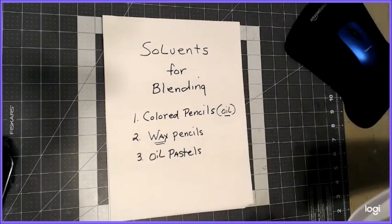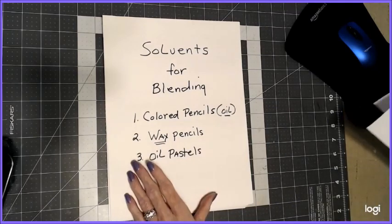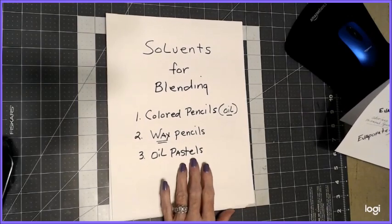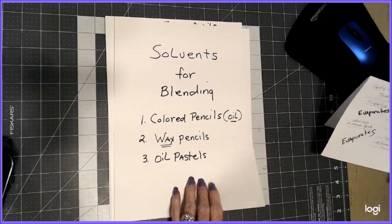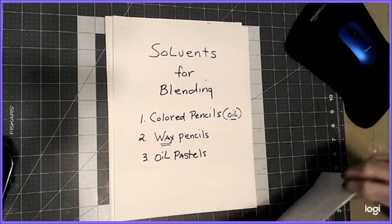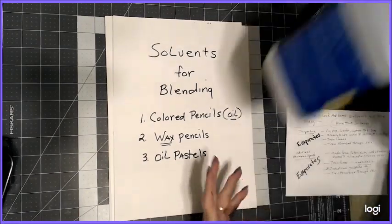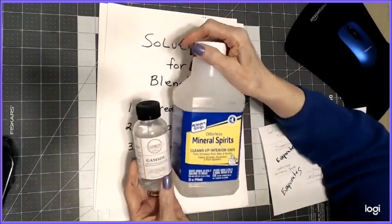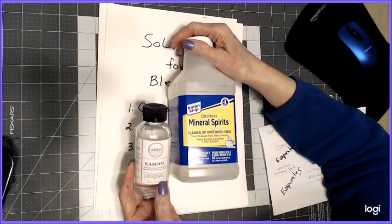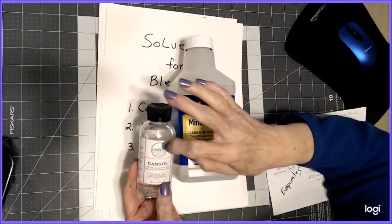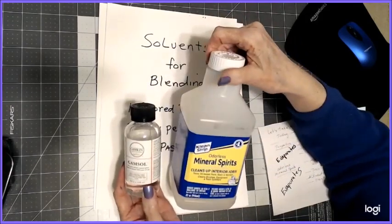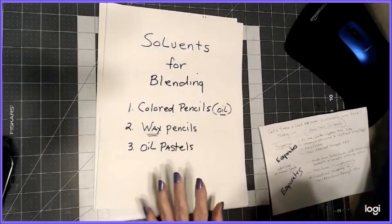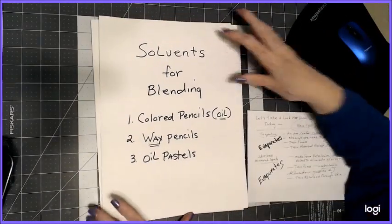I want to take a look now at some of the solvents. First, we have turpentine, which I don't have to show you, but we have odorless mineral spirits. You'll also know that as Gamsol, which is the same exact thing. This one is marketed to artists at high prices, almost $10, and this one was $3 maximum.